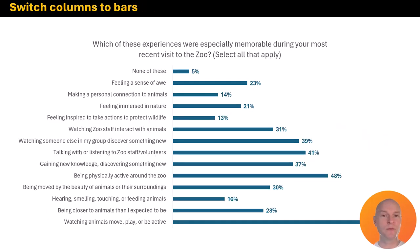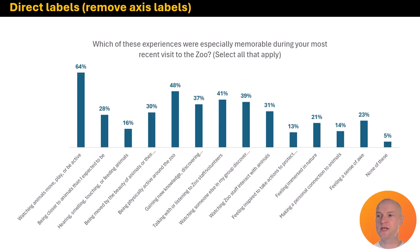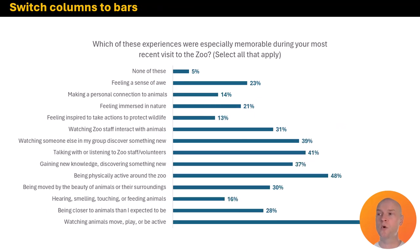Now, the biggest switch we need to make: anytime you have a chart with 45-degree text along the horizontal X-axis, go ahead and switch it from a vertical column chart to a horizontal bar chart. Now I don't have to crane my neck to read that text — I can read it right down the list.